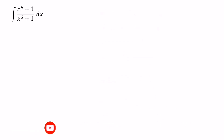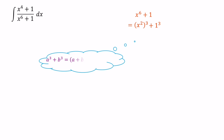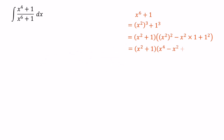Let's consider the denominator value x to the power of 6 plus 1. The x to the power of 6 value we can write as x squared cubed, and the 1 value we can write as 1 cubed. We know a cubed plus b cubed equals a plus b times a squared minus ab plus b squared. In this case, x squared is just like a and 1 is just like b. So we can write x squared plus 1 times x to the power of 4 minus x squared plus 1.